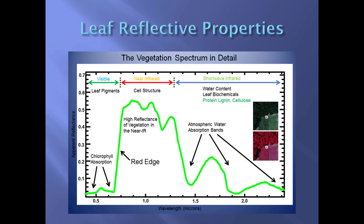Looking at the green curve, there are areas of chlorophyll absorption and atmospheric water absorption bands, which are lower, meaning high absorption and low reflectance. In the visible portion, the two dips indicate chlorophyll absorption in the red and blue portions of the electromagnetic spectrum. The slight peak in the middle is the green portion, which is why plants appear green.